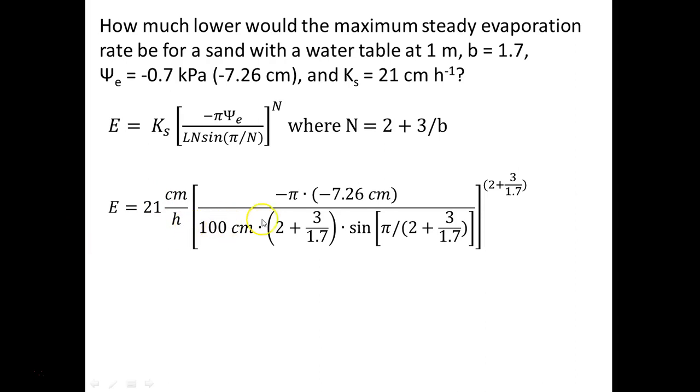multiplied by minus pi times minus 7.26 centimeters—this is the air entry potential that we were given. And in the denominator, we have 100 centimeters. So this is the L term,